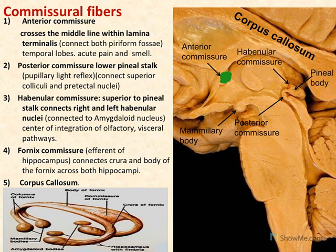To describe the posterior commissure, we first have to describe the pineal gland. This rounded structure is called the pineal gland or pineal body, which is important for regulation of the dark-light cycle of the body and regulation of sleep. The pineal gland lies between two stalks: the upper stalk and lower stalk.